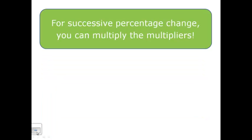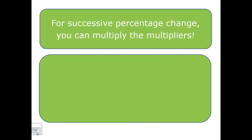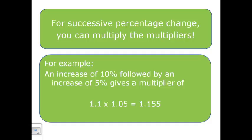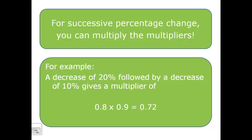When we have those successive percentage increases or decreases, we can actually multiply the multipliers. For instance, an increase of 10% followed by an increase of 5% would be 1.1 times 1.05, and that gives us a grand total multiplier of 1.155. This also works for a decrease, so a 20% decrease followed by a decrease of 10% gives a multiplier of 0.8 by 0.9.